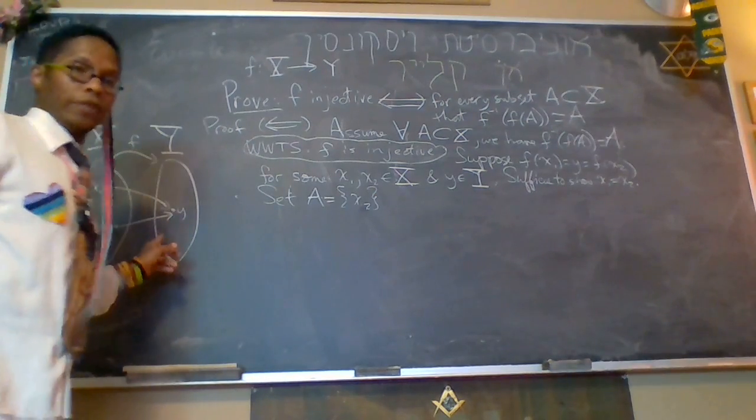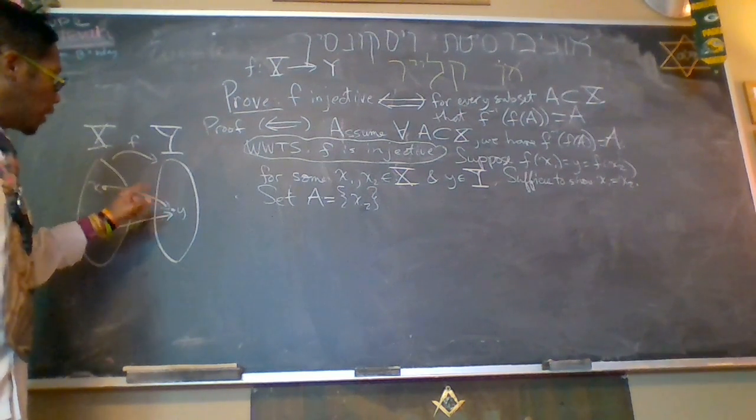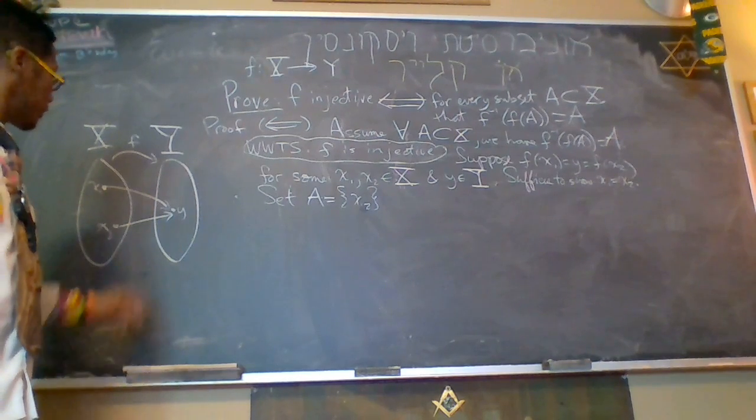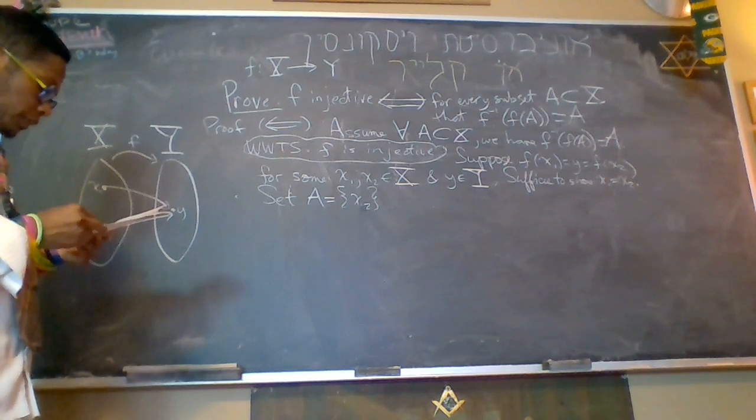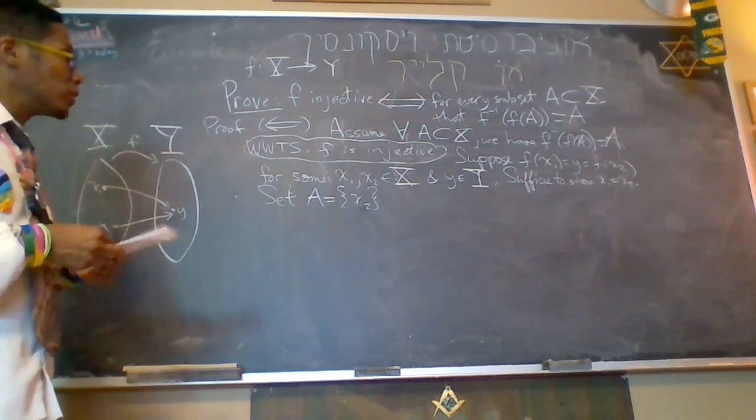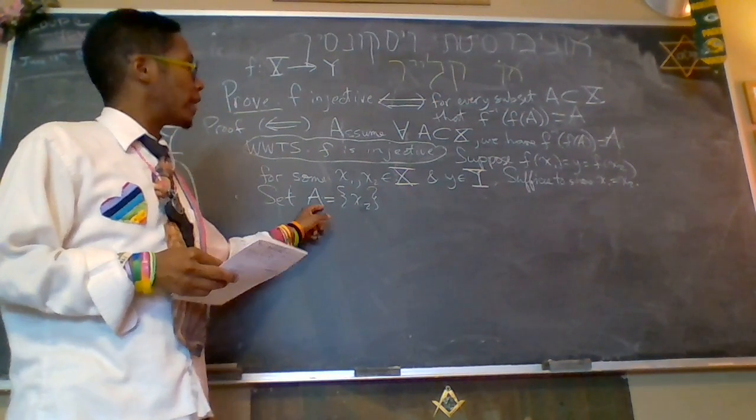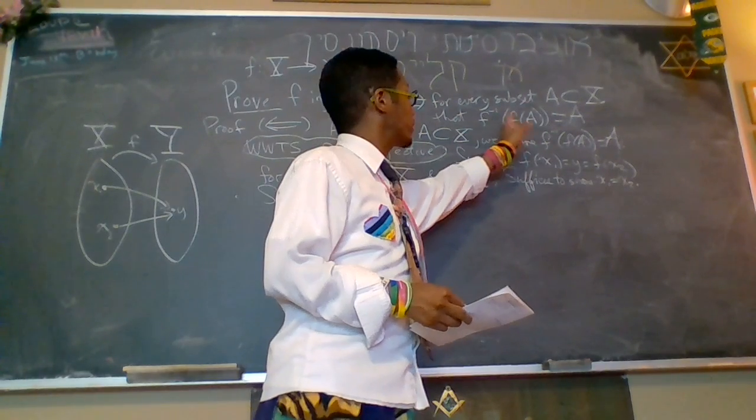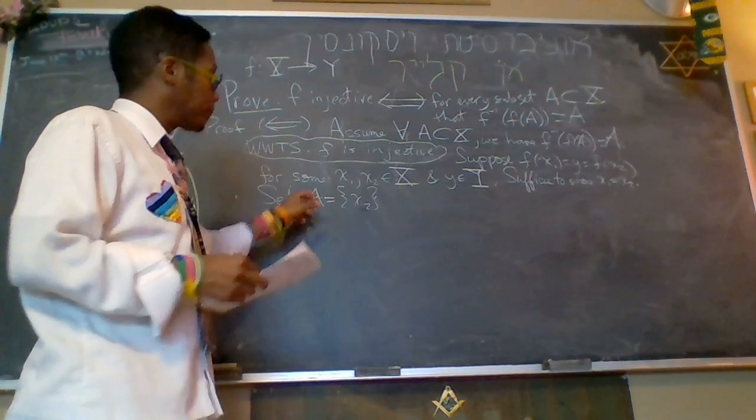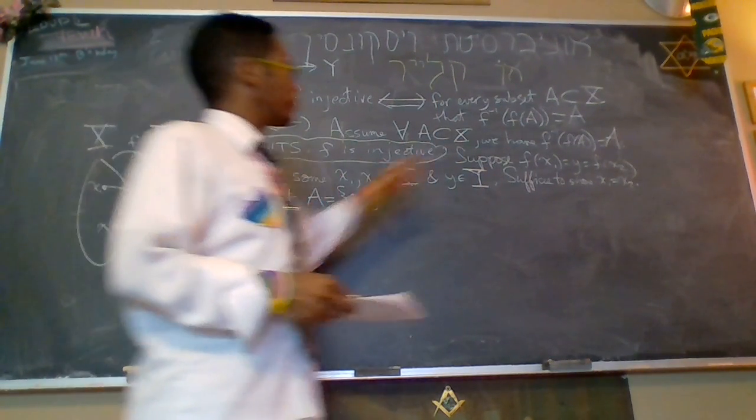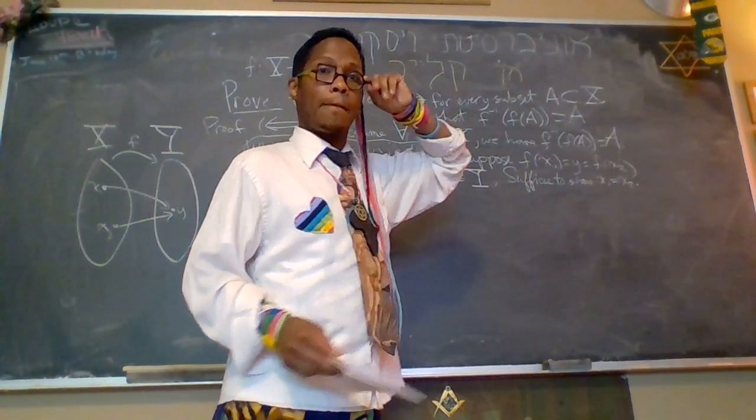So we have this helpful diagram again. We have x1, x2 over here in the domain. They map to this particular y in the range. And I'm going to set A to be the set that contains just x2. So remember, our goal is to show that x1 equals x2. And I'm going to use this fact A here because I know the inverse image of the image of the set containing x2 is exactly equal to x2. That's where I'll be using this in the future. That's why I picked one. I picked one of every possible subset. This is just one. And this should still be true because we're assuming this is true.